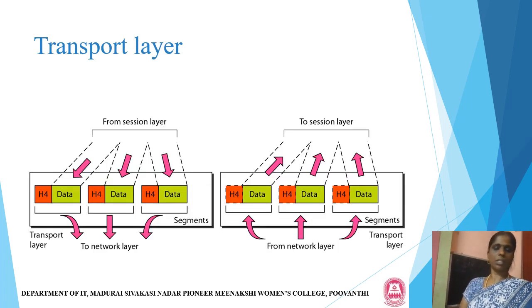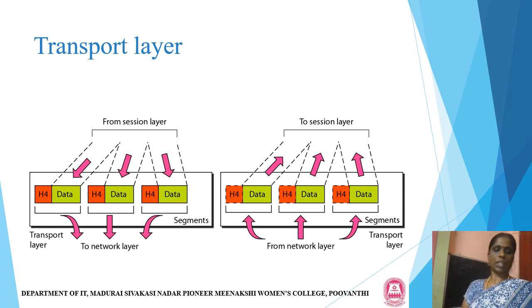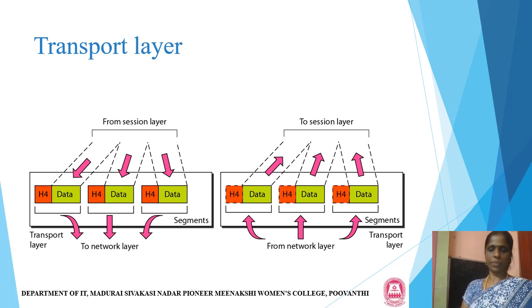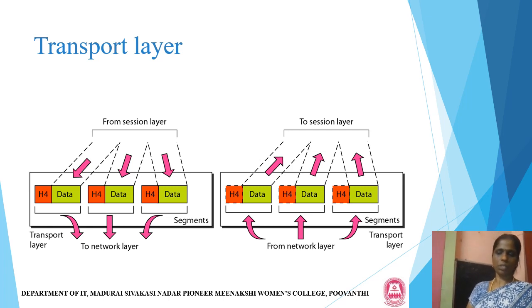This is the diagrammatic representation of the transport layer. Data is received from the session layer on the sender side, with header H4 specified in the data. The data message is divided into several segments in the transport layer. These segments are received from the session layer and sent to the transport layer on the receiver side. The transport layer then sends the segments back to the session layer, and information is processed in this way.